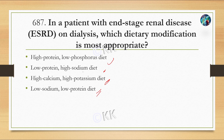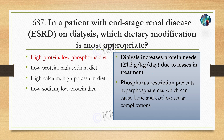The correct option is A: high protein, low phosphorus diet. During dialysis, protein requirement is more than 1.2 gram per kg per day due to protein loss during treatment. However, phosphorus restriction is important to prevent hyperphosphatemia, which can result in bone loss and cardiovascular complications.